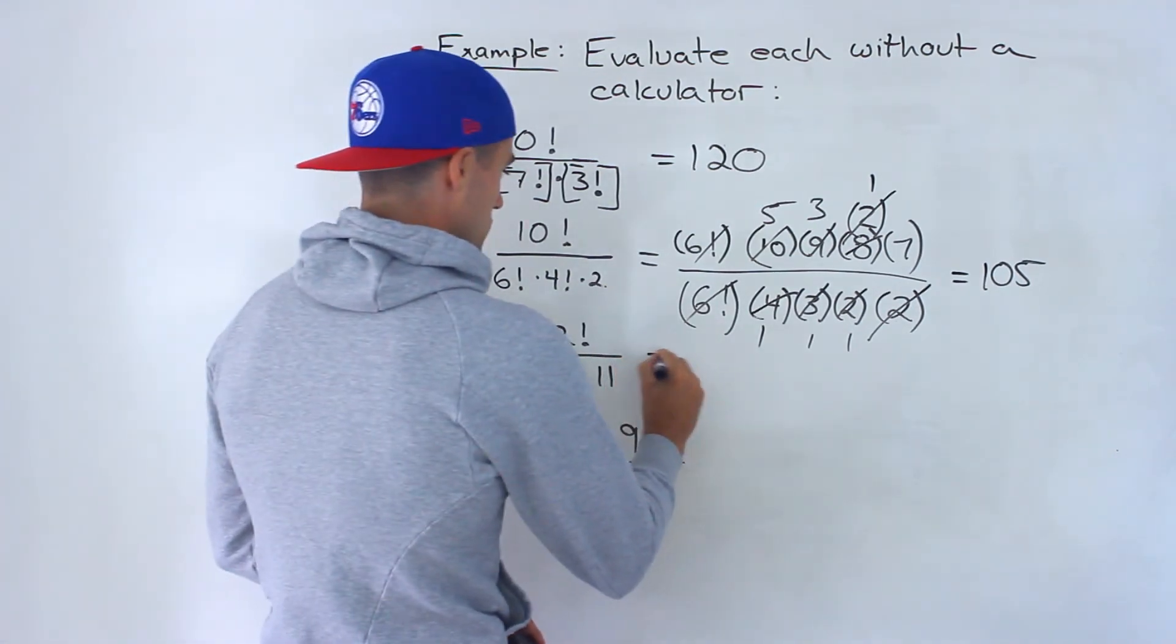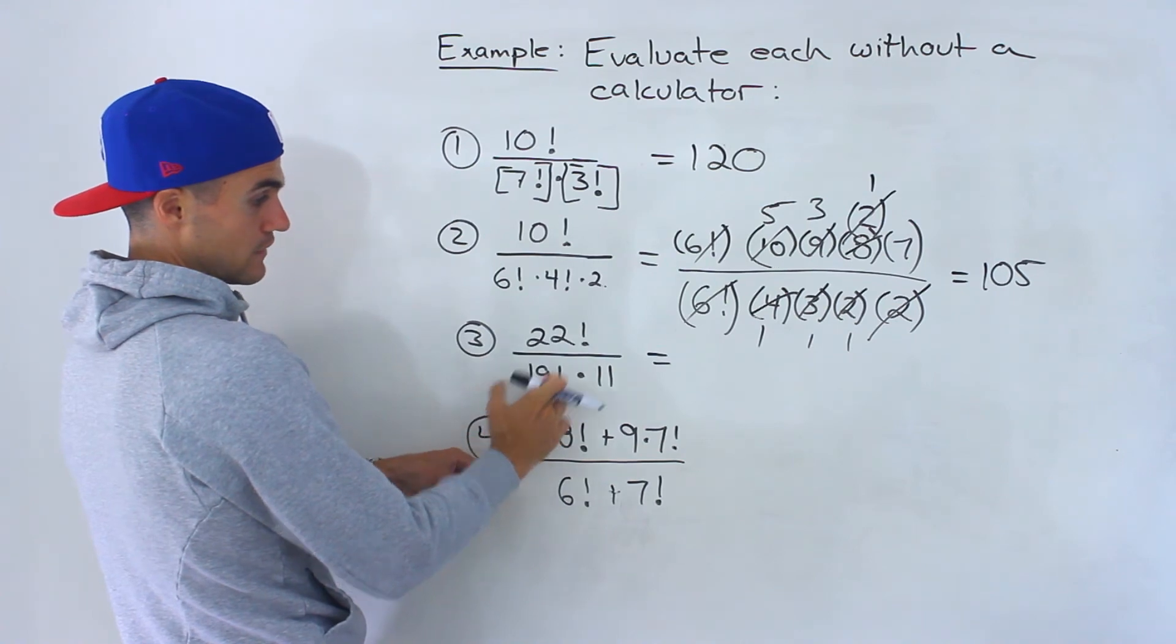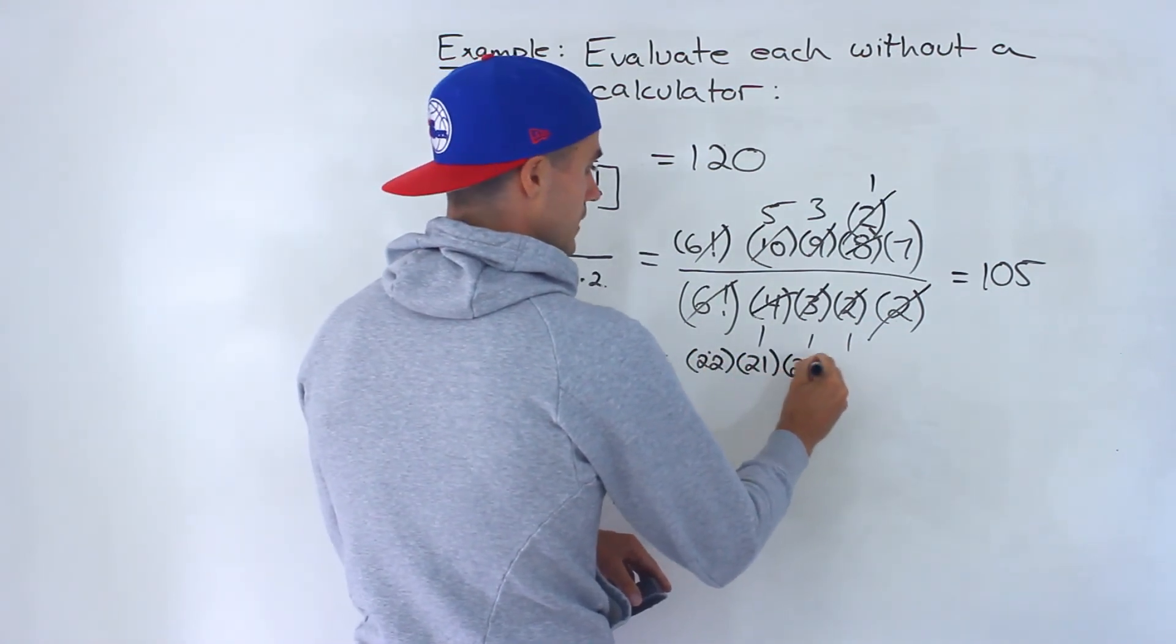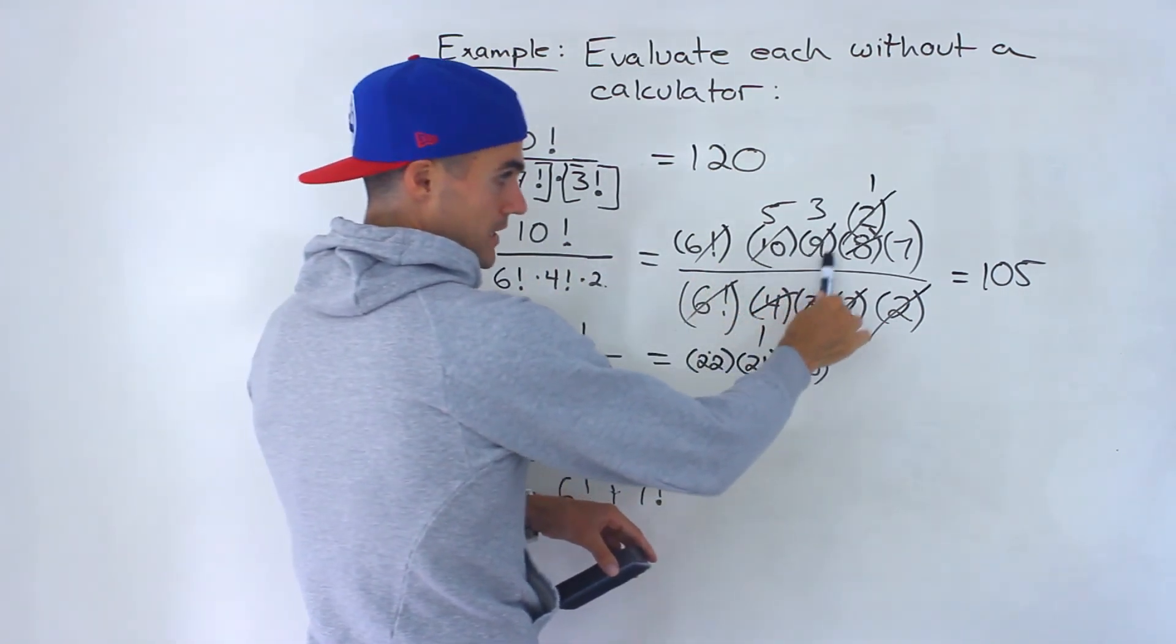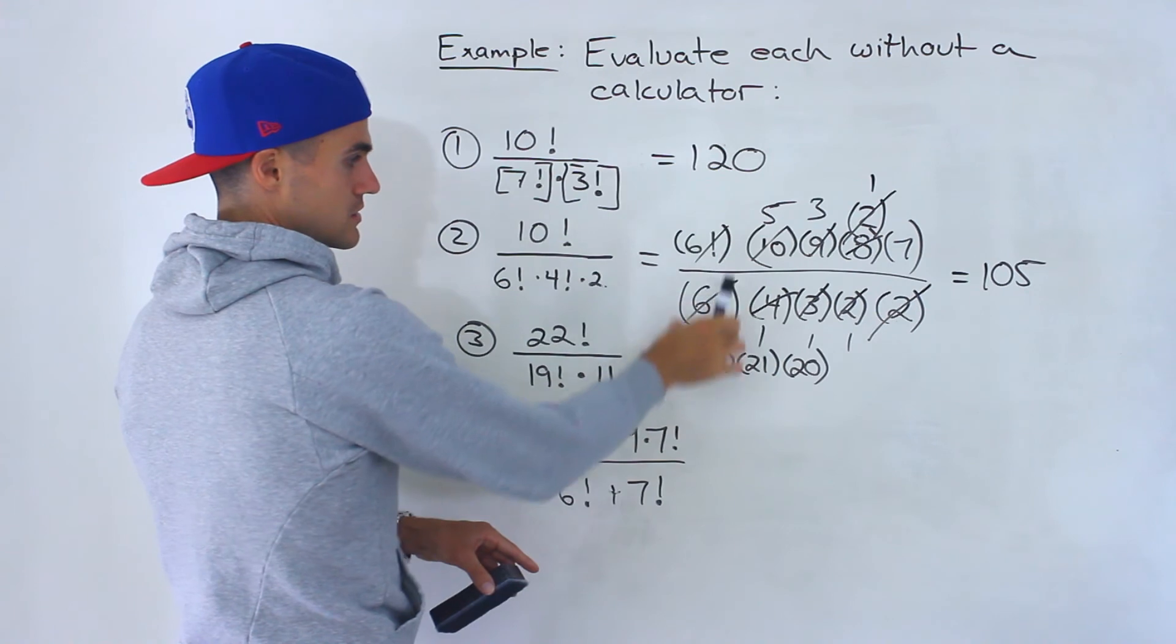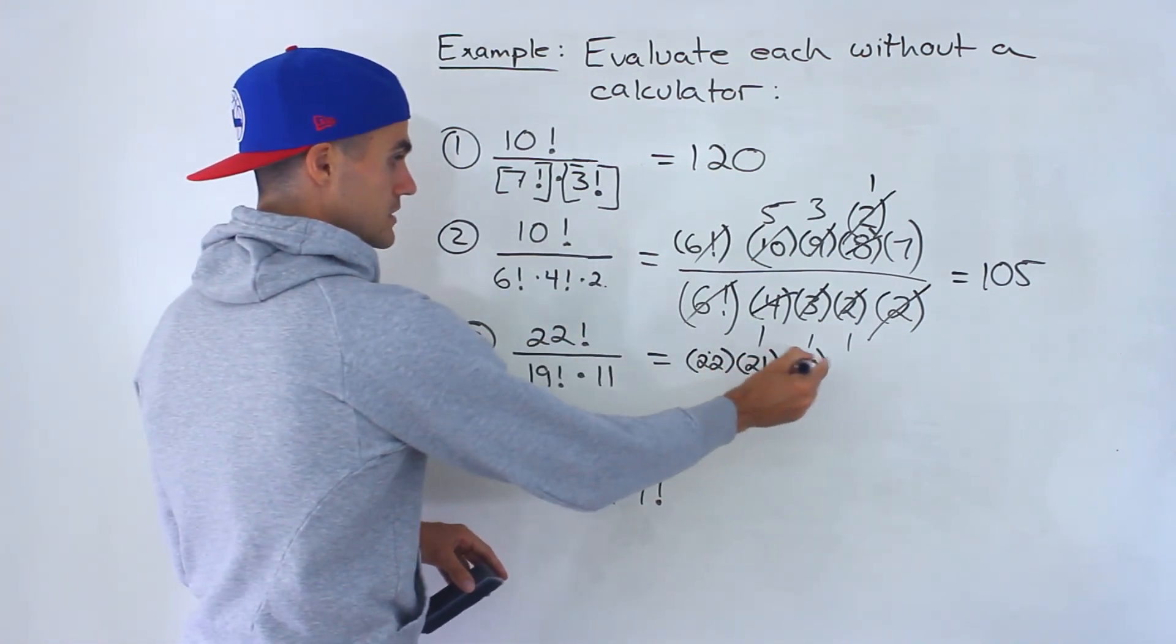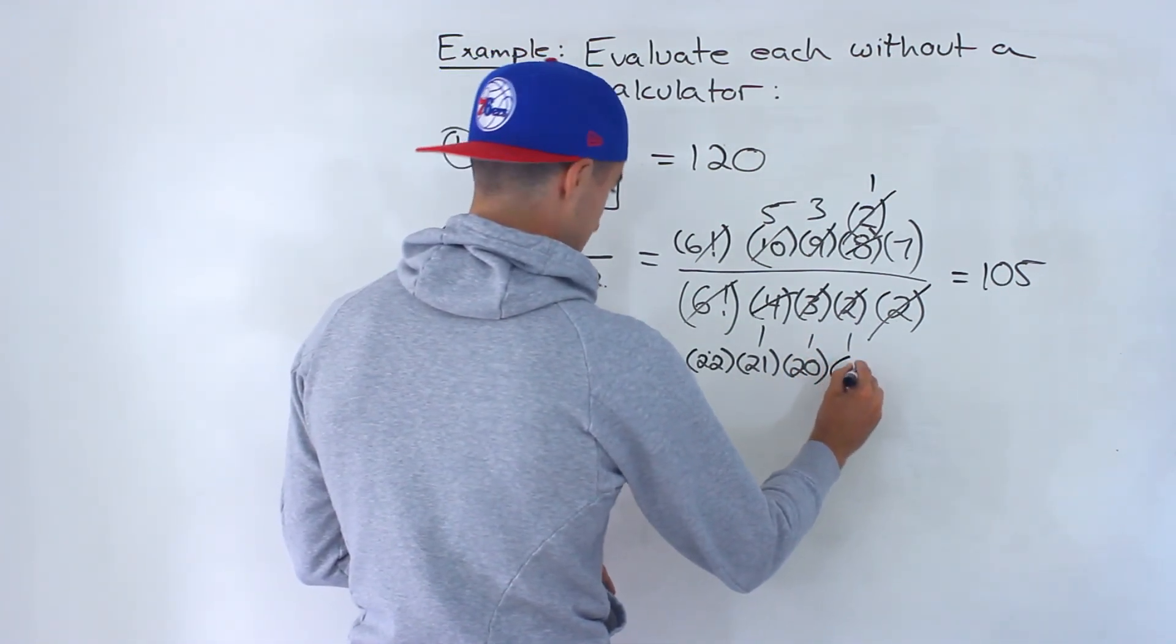Number 3, 22 factorial over 19 factorial times 11. Again, I'm going to factor out a 19 factorial from the 22 factorial. Let's actually put it in order this time. I just realized I wasn't doing that above. The nicer way to write this is the 10 factorial should be 10 times 9 times 8 times 7 times 6 factorial, just to keep it in a nice order. I was putting it in front just to show it's going to cancel out, but usually the nicer way is writing it out in order. So we'd have 22 times 21 times 20 times 19 factorial.